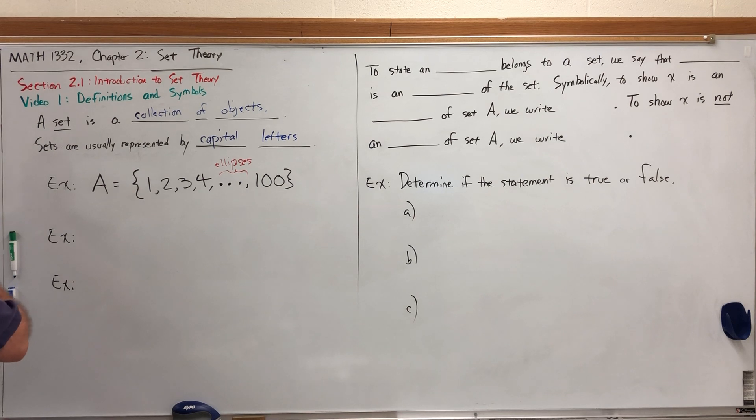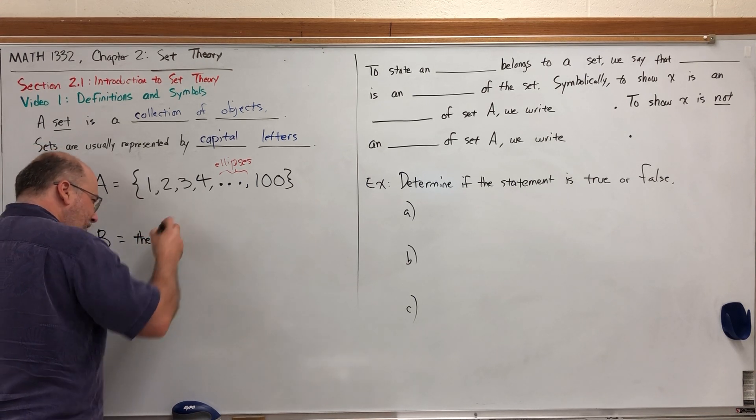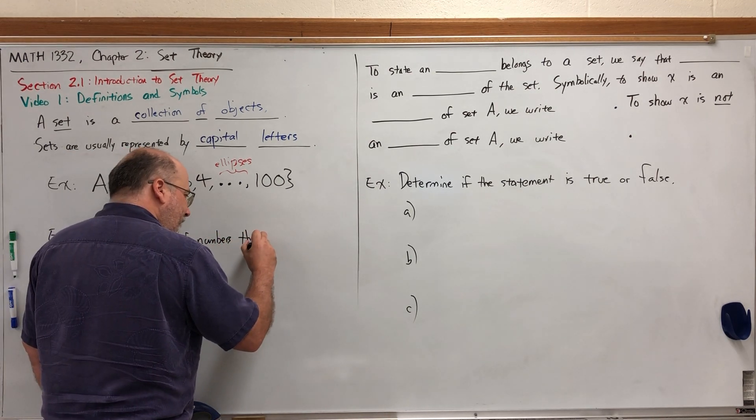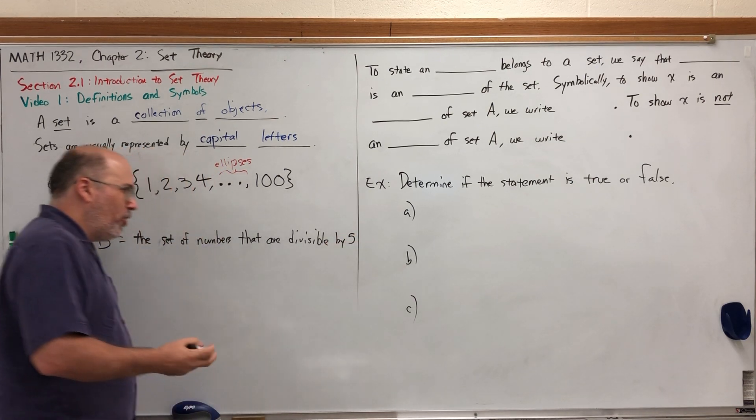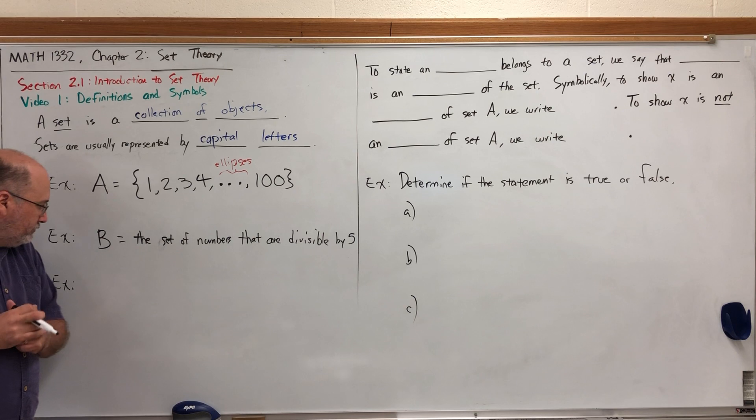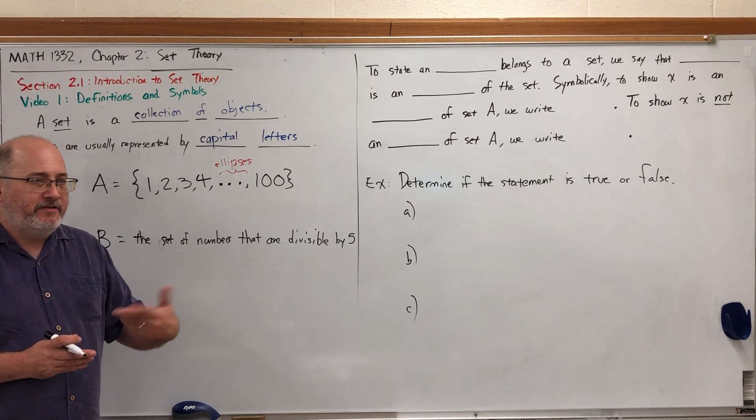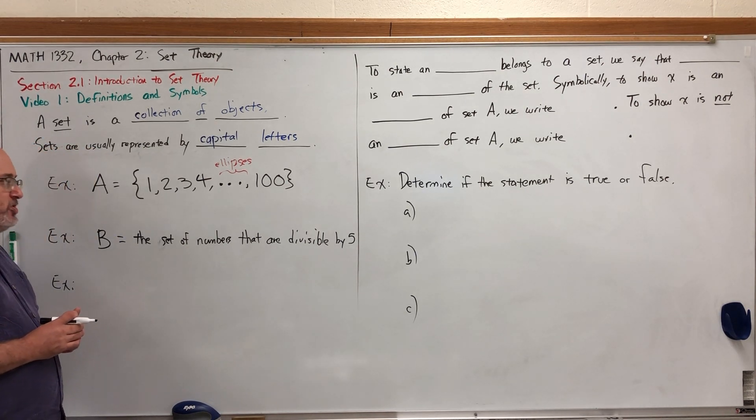Let's define another set, capital B, but this time instead of listing its elements, let's describe them. We'll say that capital B is the set of numbers that are divisible by five. So what numbers would be in B? All the numbers you can divide evenly by five, such as 5, 10, 15, 625, 720.